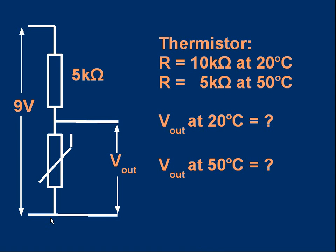Here's a short example. You've got a 5 kilo ohm resistor, often referred to as a 5K resistor, in series with a thermistor. And we apply 9 volts across this potential divider. We're going to measure the voltage across the thermistor. That's our output voltage V_out. We're told that the resistance of the thermistor at 20 degrees C is 10K. Its resistance at 50 degrees C is 5K. And the question is, how big is V_out at 20 degrees C and at 50 degrees C?